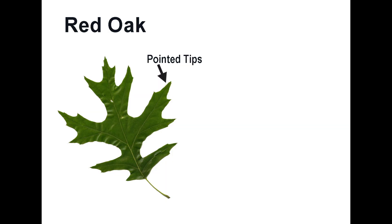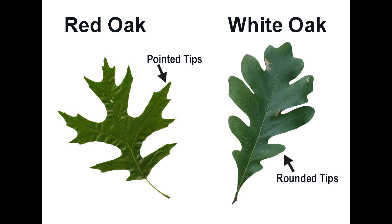To start off, we're going to go over the difference between white oak and red oak. The red oak group has pointed tips and edges on the leaves, and the white oak group has rounded tips and edges.